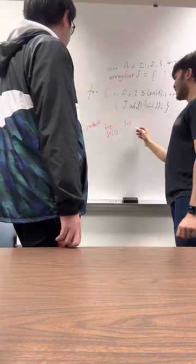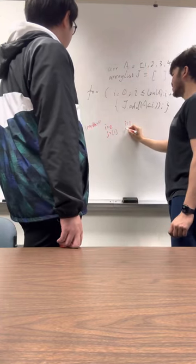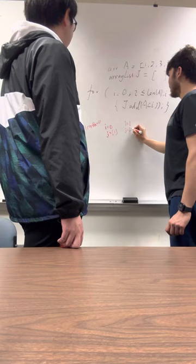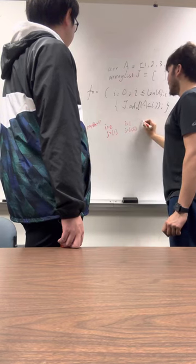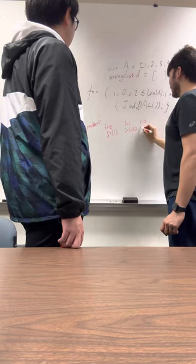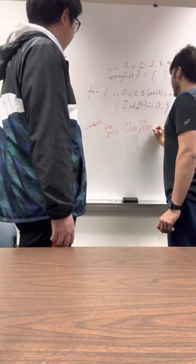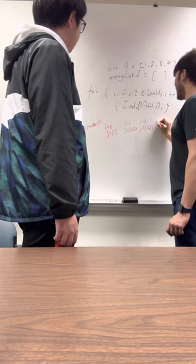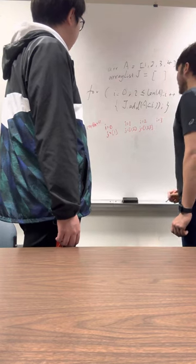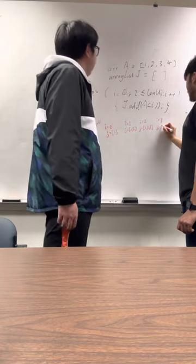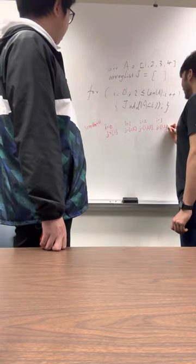So when i equals one, what would happen to J? Should be one and two. Yeah. And how about when i is equal to three? So J should have all the elements from A. Yeah, that's correct.